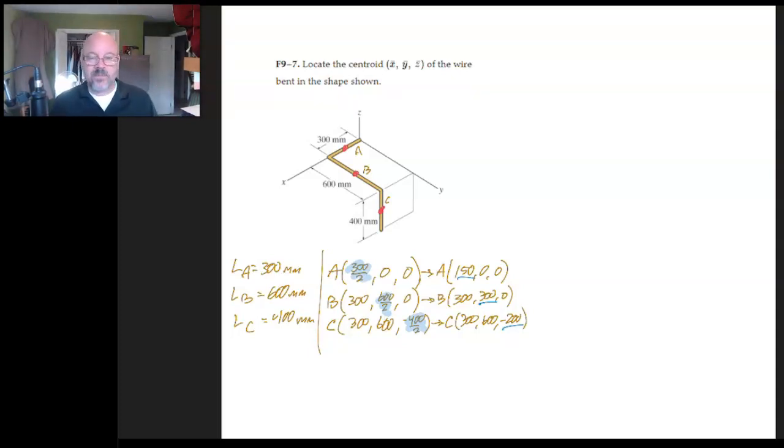So by go ahead and taking the time to write it this way, 300 over 2, 600 over 2, minus 400 over 2, it's going to help you, help clarify in your brain what's going on, which is going to reduce your chance of error. And then if, for some reason, you should have an error later on, then you could come along and you can fix it. You can find out where that error is.